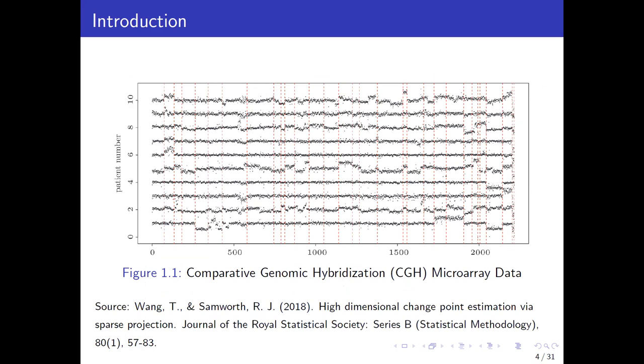The first example is microarray data. In this study, we have several individuals with bladder tumors. We can plot their log intensity ratio of some chemicals measured in 2,000 locus on their genomes. Note that all these patients have the same tumor. If we can observe some mean shift at a same locus, then the corresponding locus is believed to be disease-related. The author has shown the most significant mean shift using the red vertical lines.